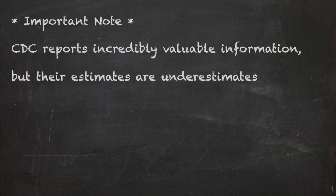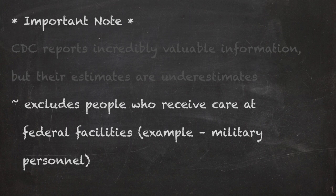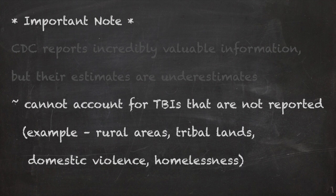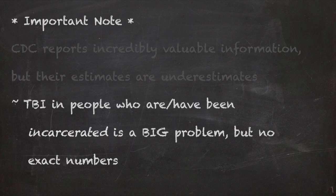This is a good time to point out that the CDC reports a lot of valuable information, but they are underestimates. For example, the numbers do not include people who receive care at a federal facility, such as military personnel. Also, the numbers do not include those TBIs that are not reported, which may happen in rural areas, on tribal lands, in cases of domestic violence, and for those who experience homelessness. Lastly, while CDC recognizes TBI in people in jail or prison as an important health problem, we do not have exact numbers.